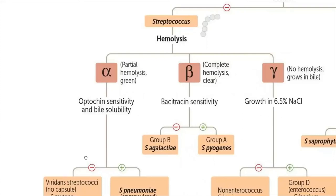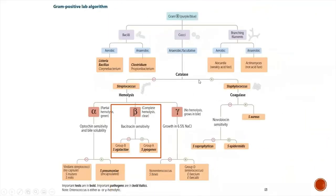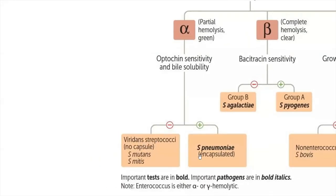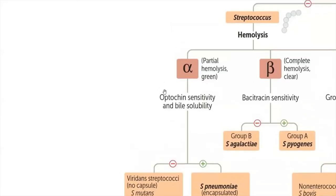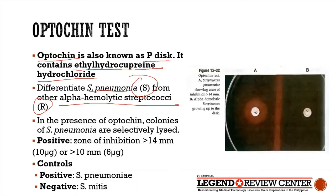For alpha-hemolytic streptococcus, we consider viridans strep and Streptococcus pneumoniae. To differentiate viridans strep from Strep pneumoniae, we do the optochin sensitivity test or the bile solubility test. The optochin test is an antibiotic susceptibility test using optochin, also known as the P-disc or ethylhydrocupreine hydrochloride. Strep pneumoniae is susceptible, while other alpha-hemolytic strep are resistant.